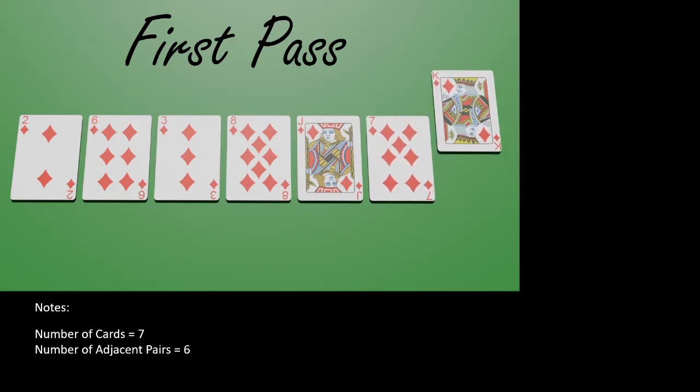Now, as you can see, by the end of the first pass, the highest card is bubbled up to its position, so we don't need to consider it in our comparisons going forward, which means for the next pass, we only have six playing cards, five adjacent pairs to consider. Bottom line, in a given pass, if the number of cards we are considering is n, then the number of adjacent pairs that we are considering is n minus one.